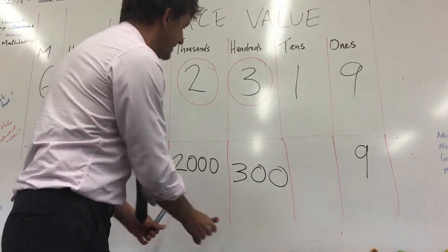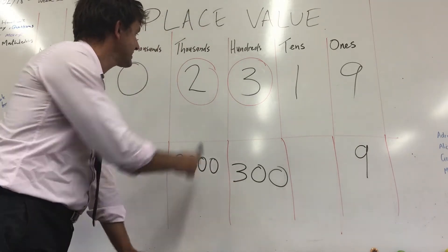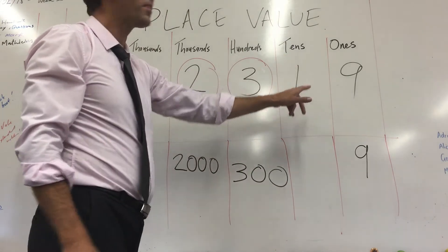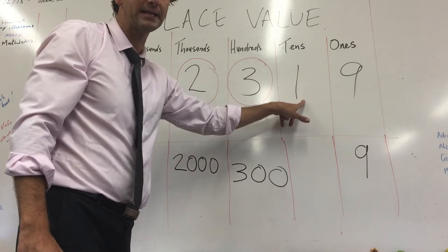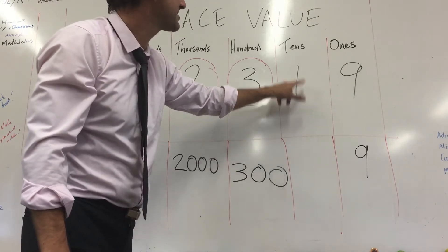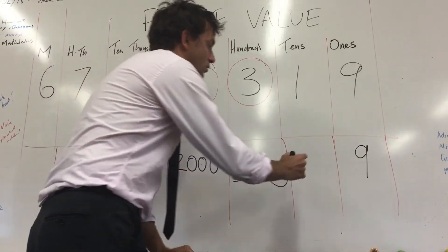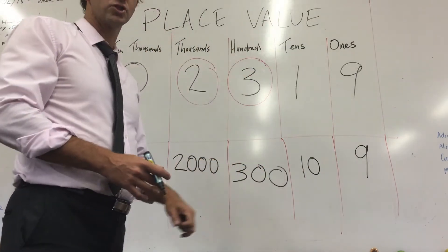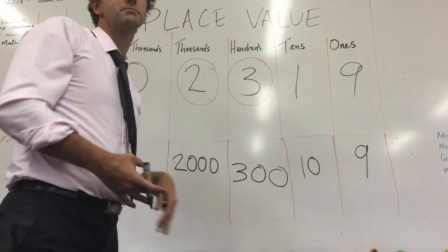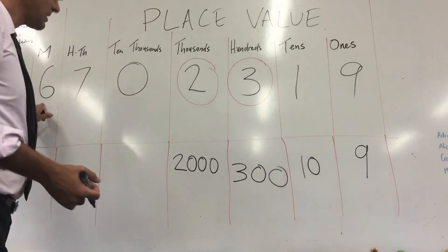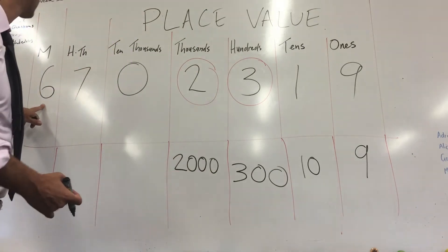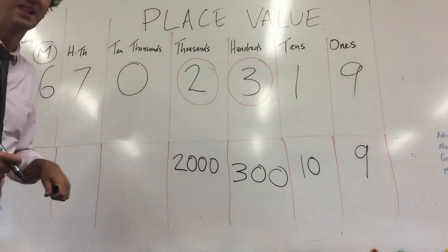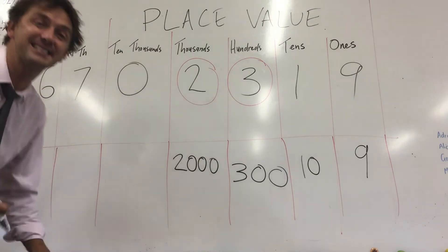So to review: this three really means three hundred, this two really means two thousand, this nine really means nine. Look at the number in the tens column — it's a one, but it doesn't mean like one pizza. Because it's in the tens column, it means one ten. And that six all the way up here — not like six pieces of chocolate — because it's in the millions column, it's equal to six million.